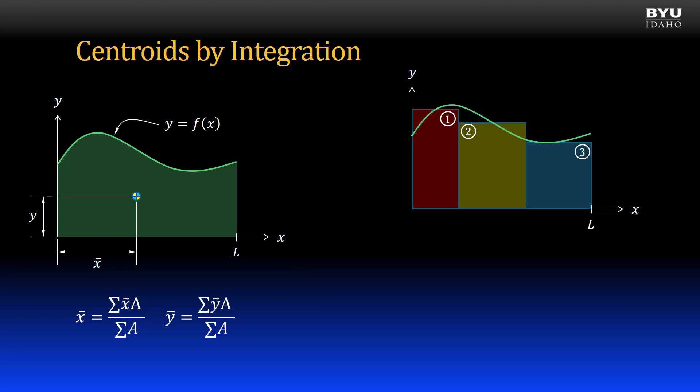We can approximate the actual solution by dividing the area into three rectangles. The centroid of each rectangle will be at its center. We will know the width of each rectangle so we will be able to find the x tilde dimensions.